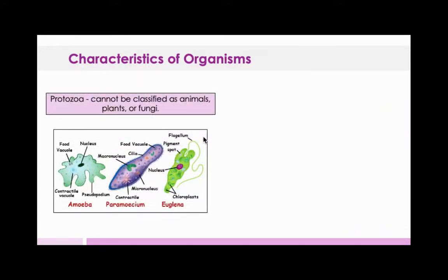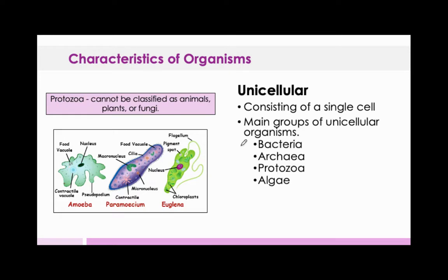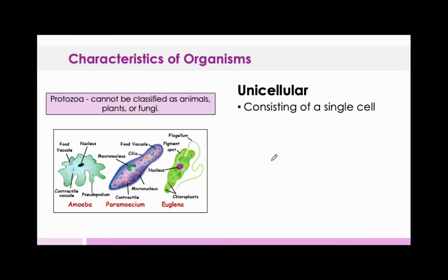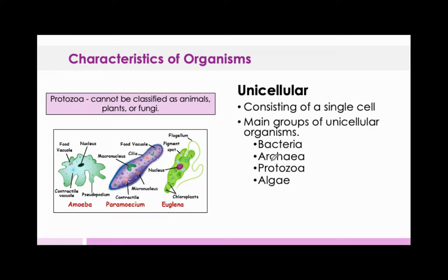Another characteristic is unicellular. These are organisms that are made up of one single cell. Unicellular organisms usually consist of bacteria, archaea, protozoa, and algae.